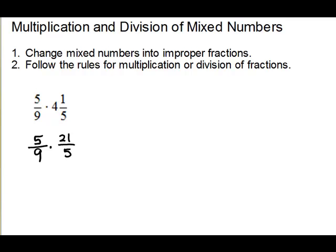So we have 5 ninths times 21 fifths. With multiplication of fractions, you can cancel on the diagonal if you have common factors. On this diagonal we have a common factor of 5 — divide both by 5, giving 1 and 1. On the other diagonal we have a common factor of 3 — divide by 3: 3 goes into 9 three times and into 21 seven times. Now multiply across: 1 times 7 is 7, and 3 times 1 is 3. So the answer is 7 thirds.